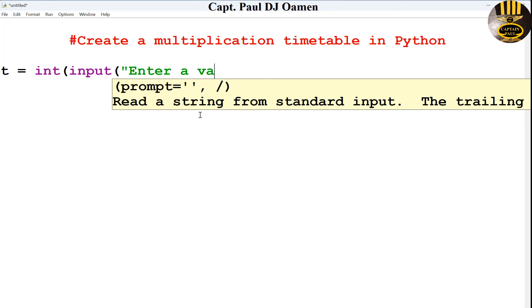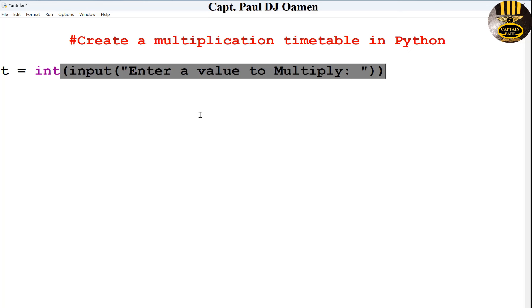a value to multiply. I'm going to enter colon there, close the speech mark and close the brackets. This double bracket needs to be closed. So that's the